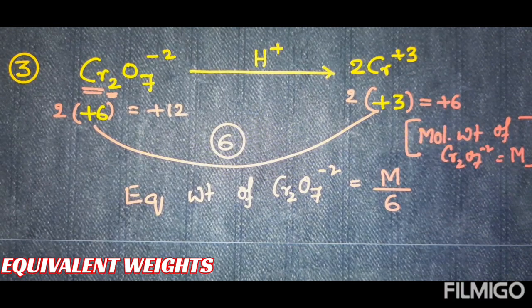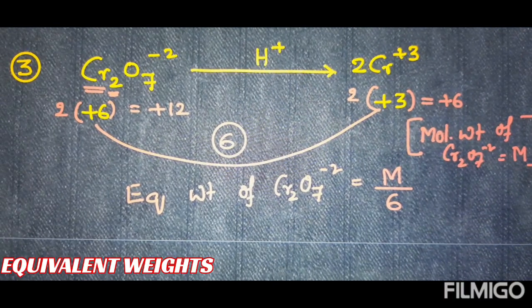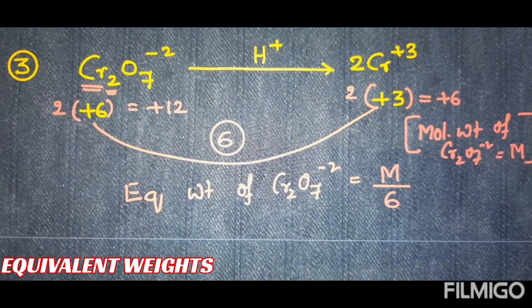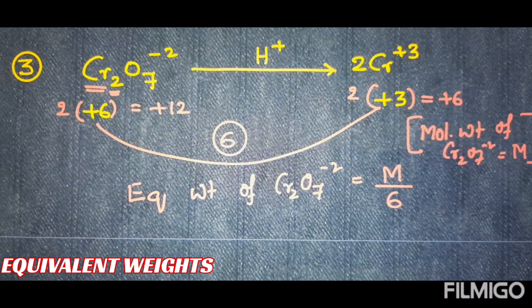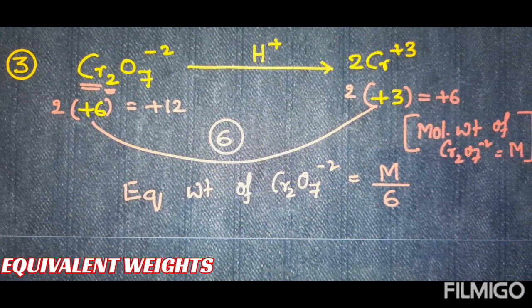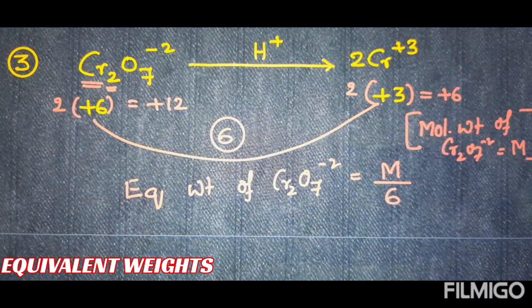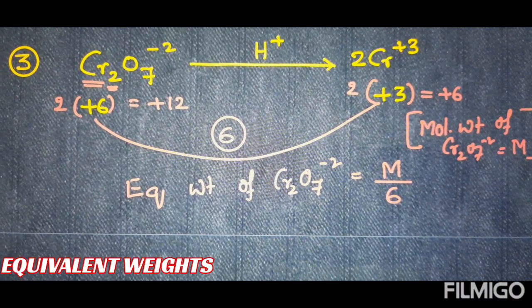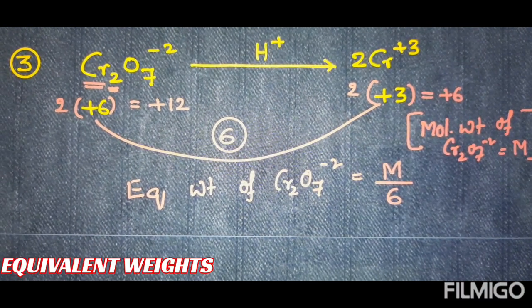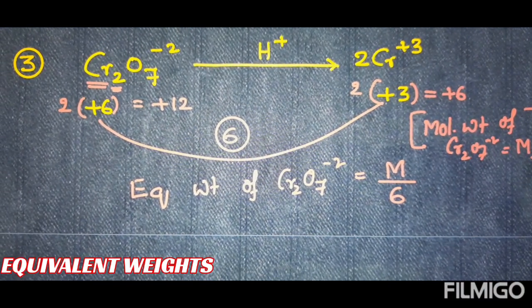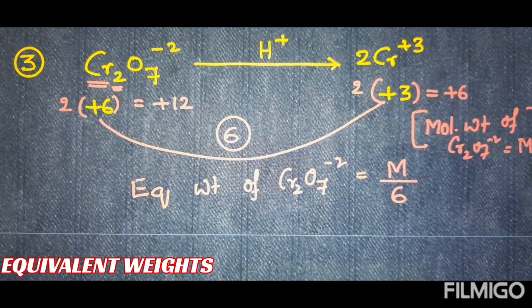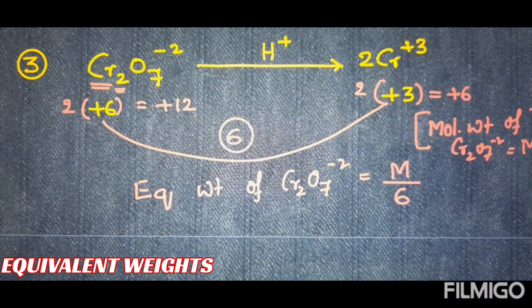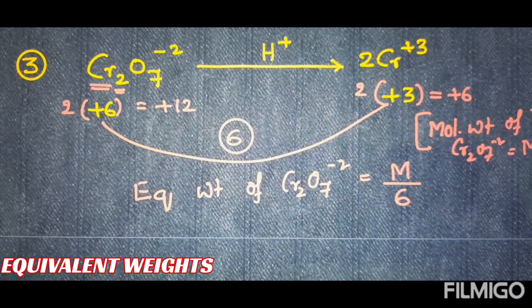This is the basic explanation for the calculation of equivalent weights of oxidants and reductants. In the next video, I am going to explain equivalent weights of acids, bases, salts, oxidants, and reductants at the level of JEE Mains, NEET, and JEE Advanced. Wait for that video, and until then students are advised to watch this video and please subscribe to support me. Thank you very much.